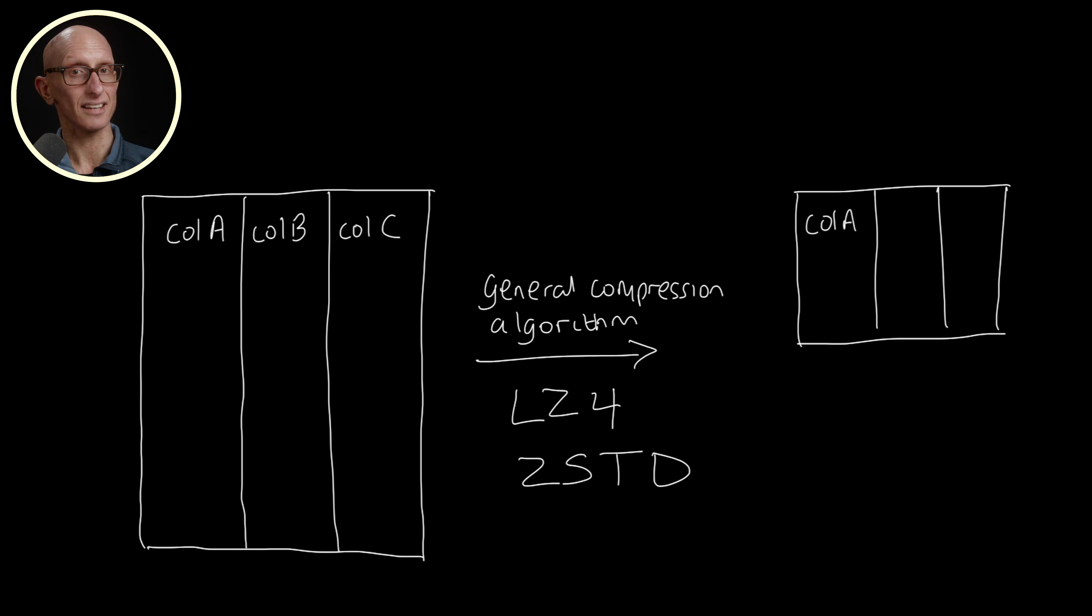This means that the data on disk takes up much less space than it would if the raw data was stored. And it's important to remember that ClickHouse applies compression on a per column basis. This means that we can apply different compression algorithms to different columns.